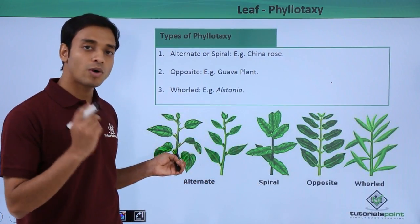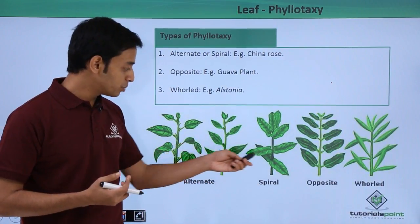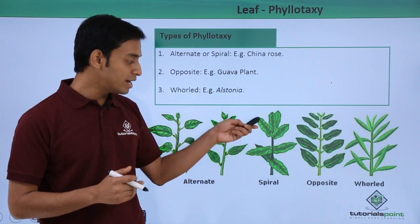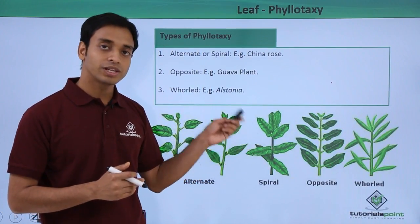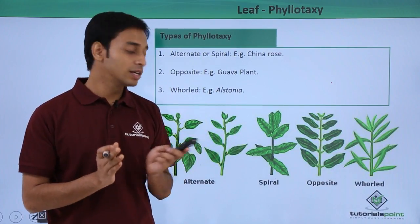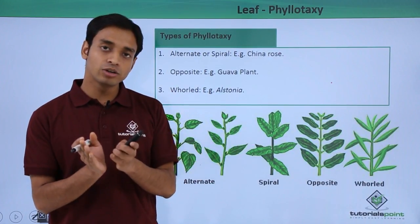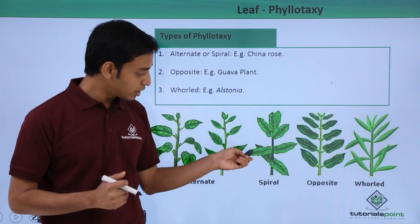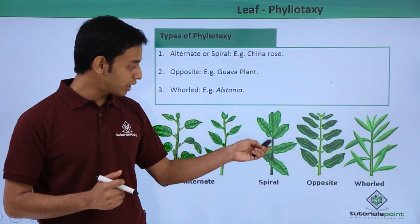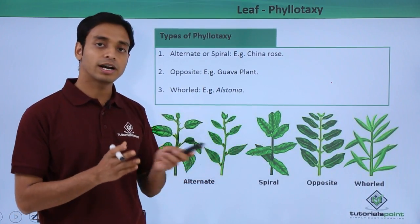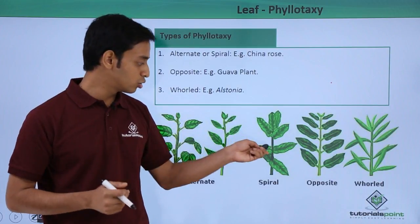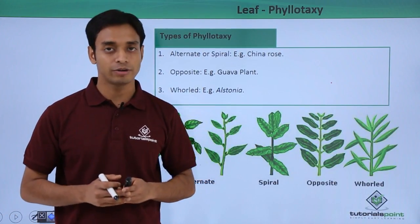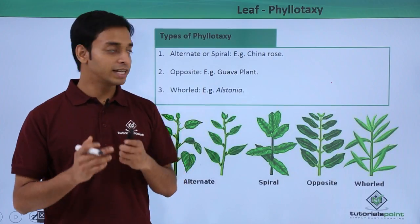In alternate phyllotaxy, from a single node only one leaf comes out. This can also be spiral: from a single node two leaves come out, and from the next node both leaves are arranged in a perpendicularly opposite direction, perpendicular to each other. Again from the next node, the leaves are perpendicular to the previous ones. This is known as alternate or spiral phyllotaxy.